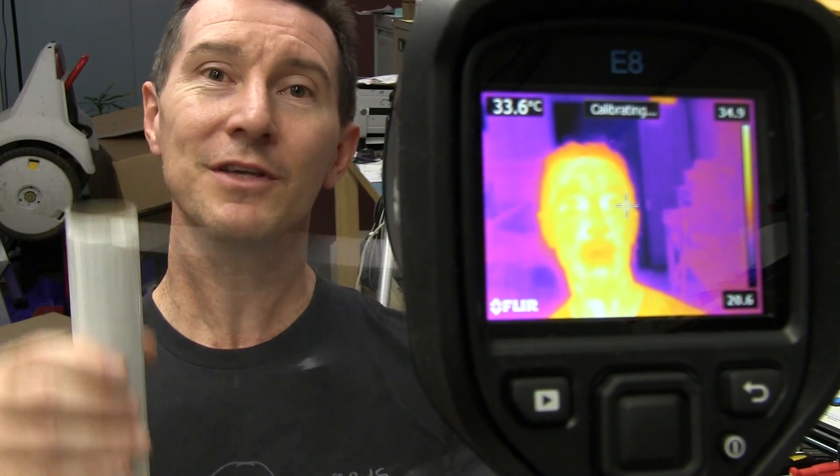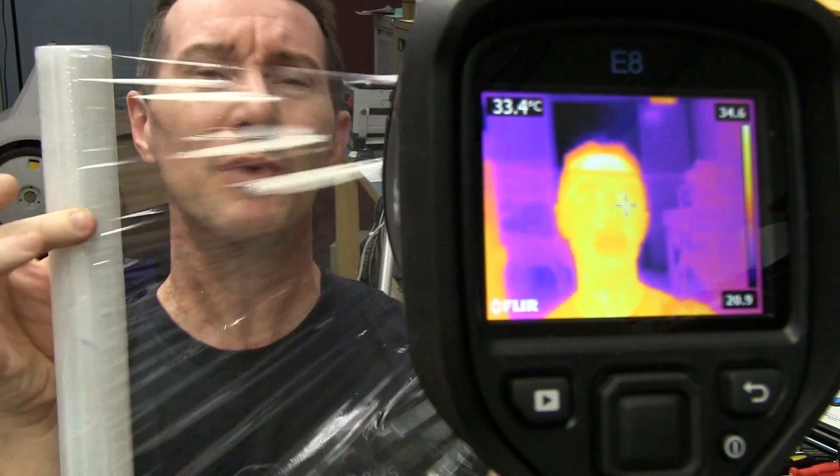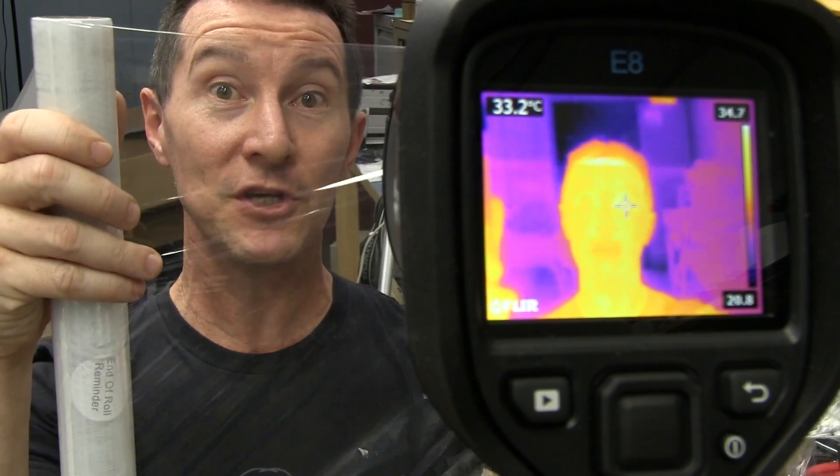But it seems kind of obvious that cling wrap is both visually and thermally transparent, because we always think in terms of visual. But that's not always the case. There are materials where you can see through them visually, but they're opaque to a thermal imaging camera. And I'll show you those in a minute.